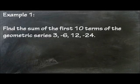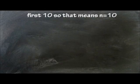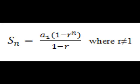Let's give it a try. Find the sum of the first 10 terms of the geometric series 3, negative 6, 12, negative 24. The first 10 terms means n equals 10. There is no last term, so we use the formula S sub n equals a sub 1 times quantity 1 minus r raised to n, all over 1 minus r, where r is not equal to 1.